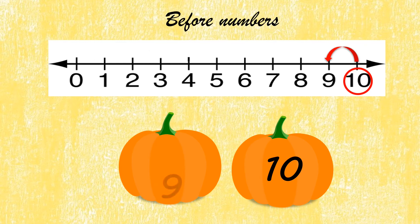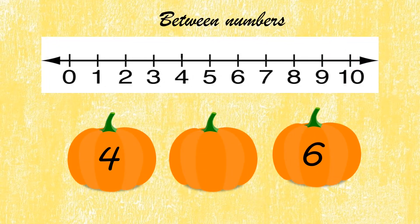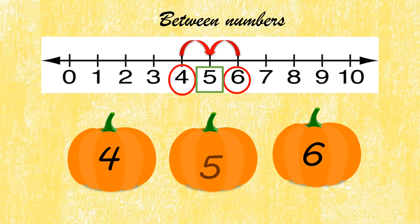The given number is 10. Identify it on the number line, jump backward — the before number is 9. Between numbers: the given numbers are 4 and 6. Identify both numbers on the number line. Find the between number — the between number is 5.